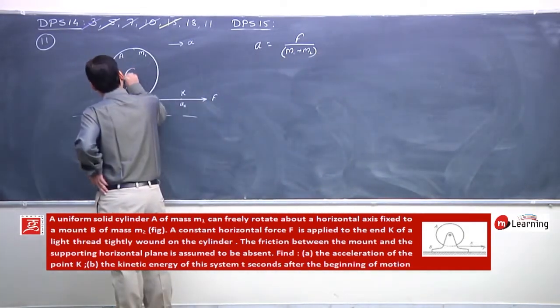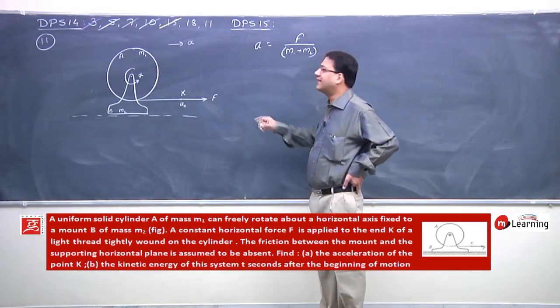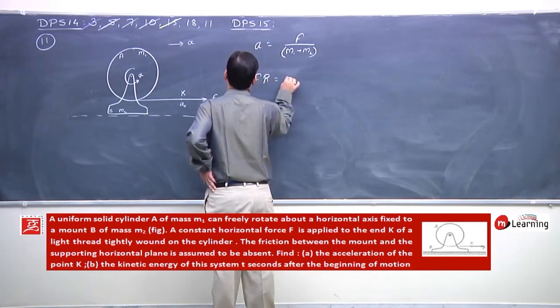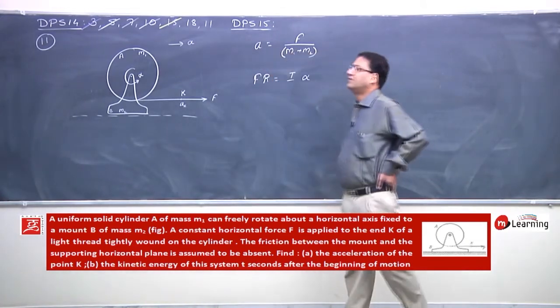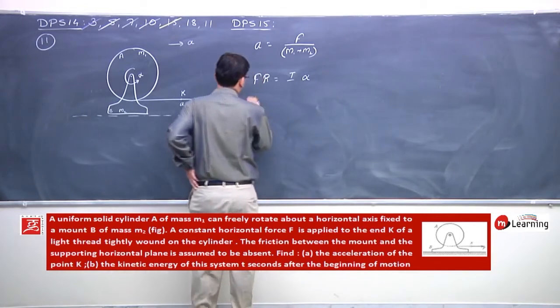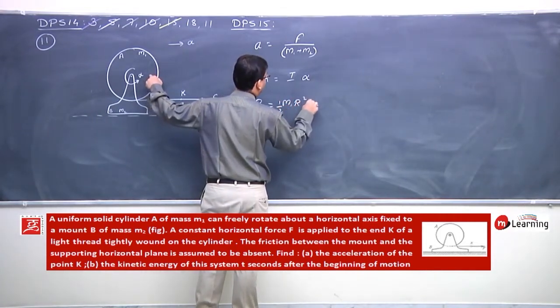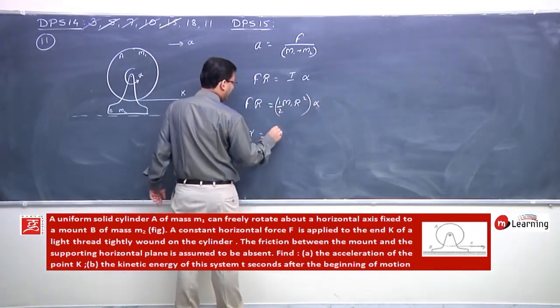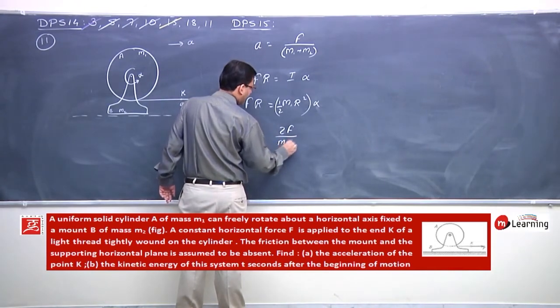In addition, there will be rotation with angular acceleration alpha. Force F into R is equal to I alpha. So F into R equals half M1 R square into alpha. So alpha is equal to 2F by M1.